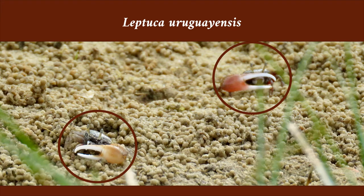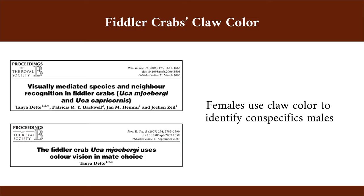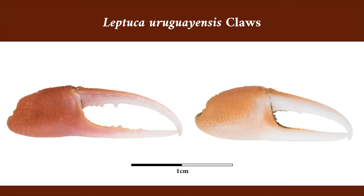In the fiddler crab Leptuca uruguayensis, males show noticeable variation in claw color within the same population. In some species of fiddler crabs, females use claw color to identify conspecific males. But intraspecific variation in claw color such as this has never been described, and therefore we don't know what is the function of claw color in this species.